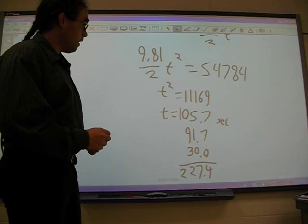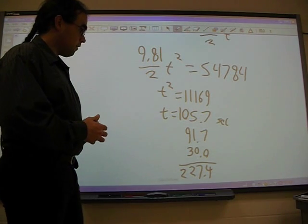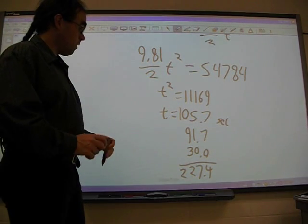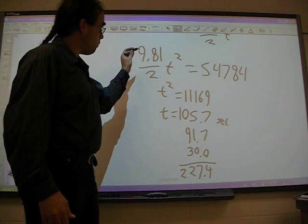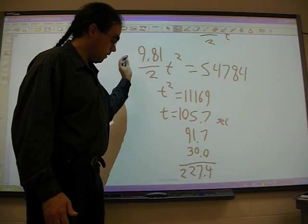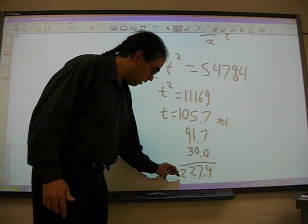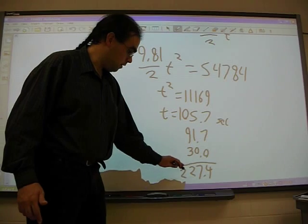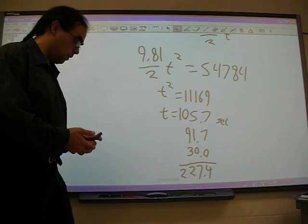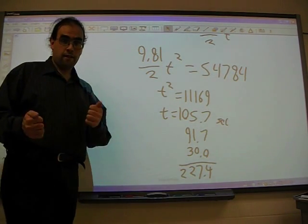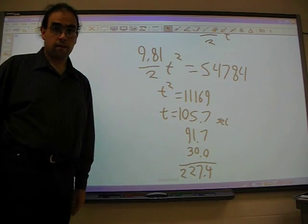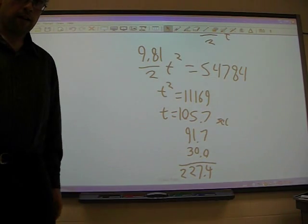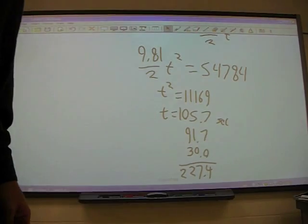And so what's our time in flight? It's the sum of this phase 3 plus the time for phase 2, 91.7, plus 30. We have 105.7, 91.7, 30, equals 227.4 seconds, and that is our answer.